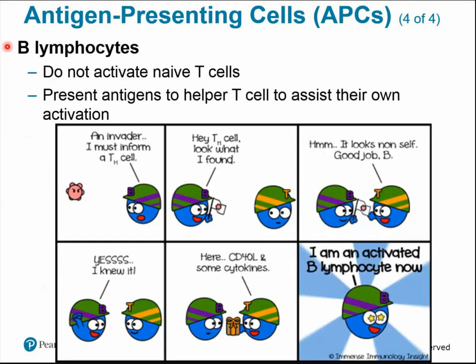B lymphocytes also play a role in antigen presentation, though unlike dendritic cells or macrophages, they cannot directly activate T cells. B lymphocytes present antigens only to activate themselves. For example, a B cell that notices an invader captures it and displays the antigen to a helper T cell; the helper T cell confirms it's non-self and provides cytokines — immune chemicals — that allow the B cell to become activated, which can then trigger the humoral immune response.